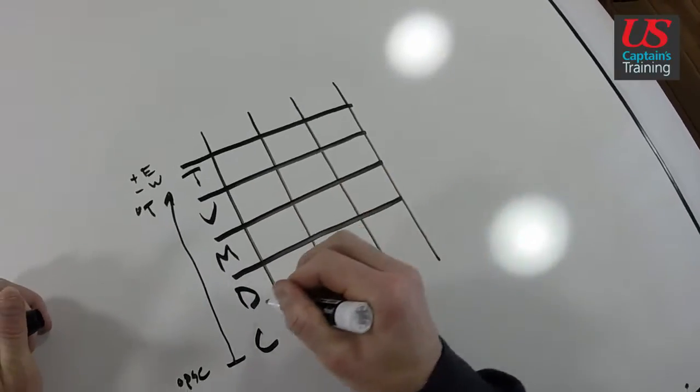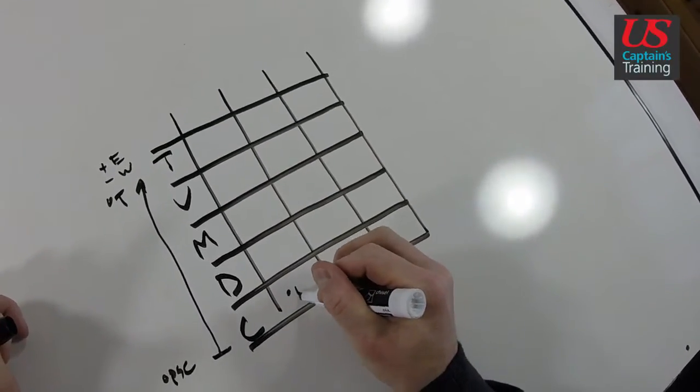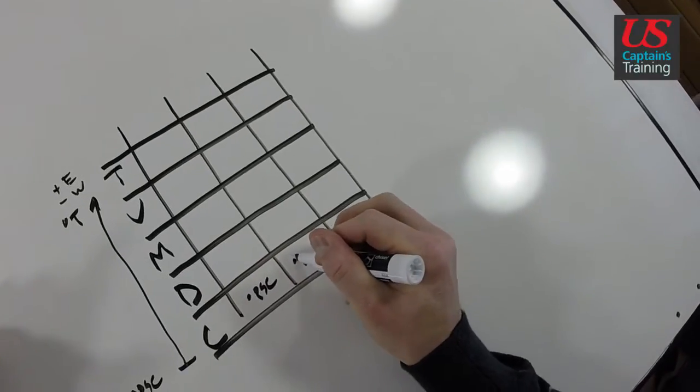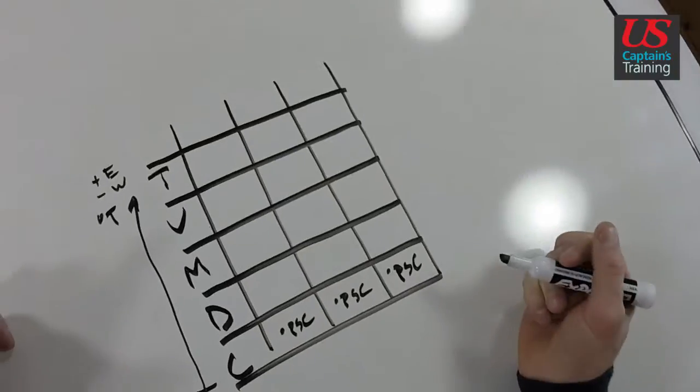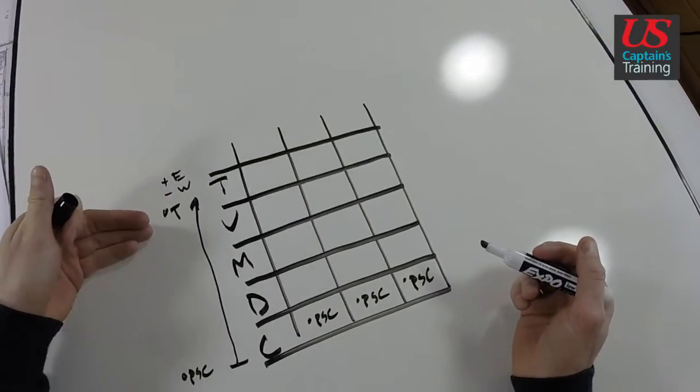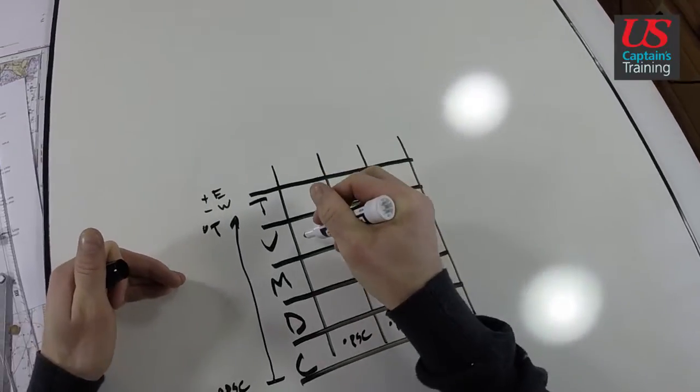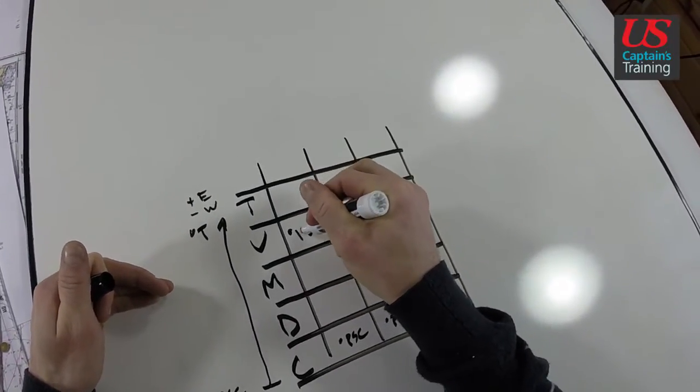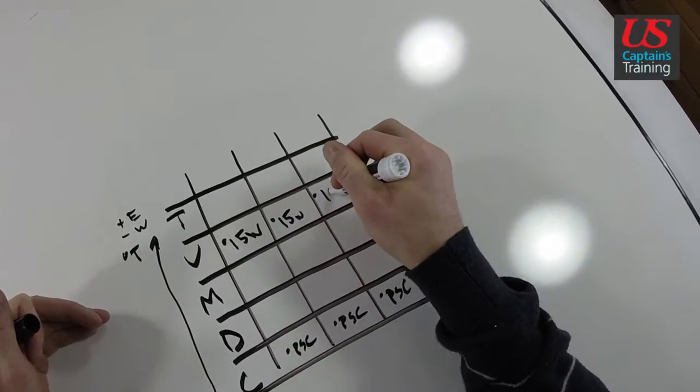In the problem, you're given three bearings in degrees PSC. They all go down here in the grid. I'll set up three columns: TVMDC, TVMDC, TVMDC. Each bearing goes in degrees PSC at the bottom of each column.